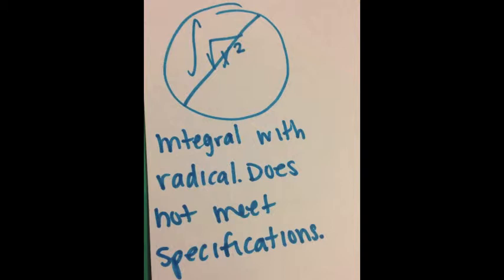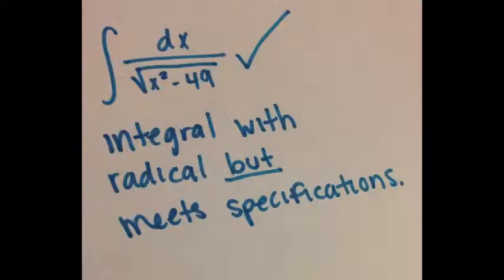You can't just use the integral of radical x squared. Yes, it may contain a radical, but it does not meet the criteria necessary to use trigonometric substitution to solve this integral. This integral — dx over the radical of x squared minus 49 — is a perfect example of where we would need to use trigonometric substitution in order to solve this problem.